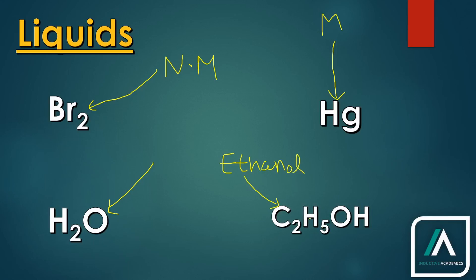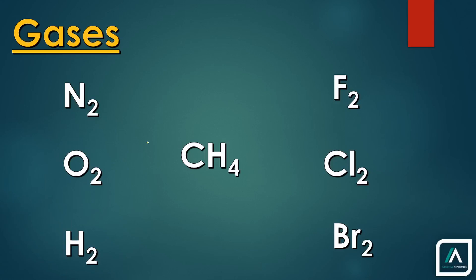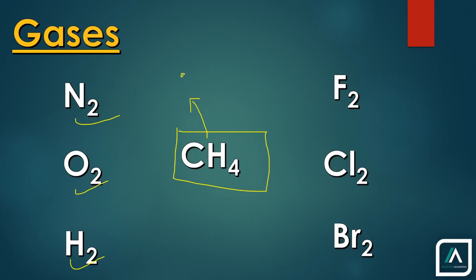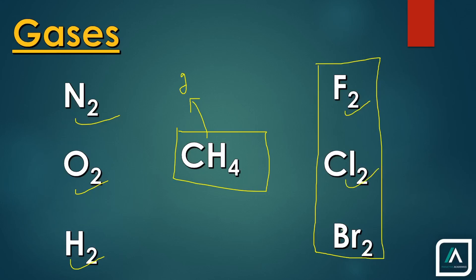Now talking about gases: nitrogen is the most abundant gas in our atmosphere; oxygen and hydrogen are the most common examples of gaseous substances. CH4, methane, also known as natural gas, is used as a fuel and is also gaseous. Then there are the non-metals — fluorine, chlorine, bromine — these are also examples of gaseous elements.